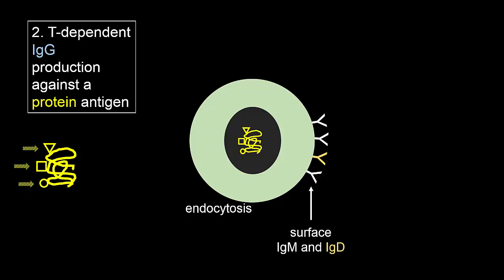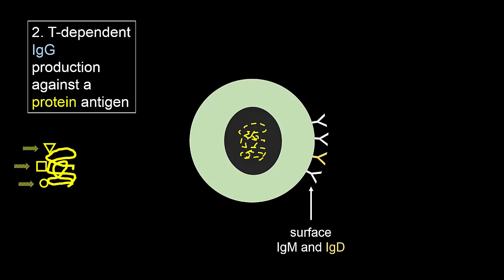The cell endocytoses the entire antigen molecule. After fusion with lysosomes, the antigen is processed by enzymes to peptides.